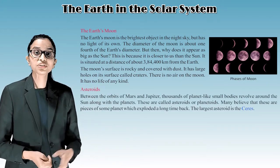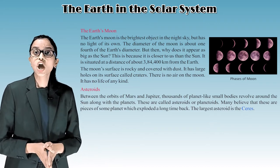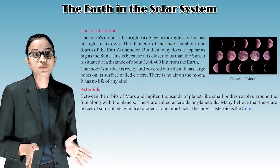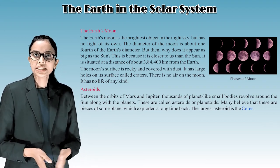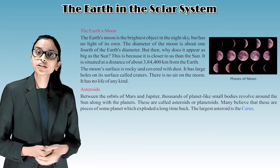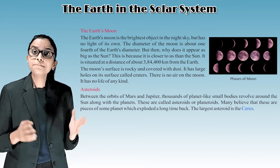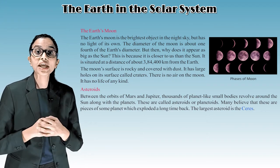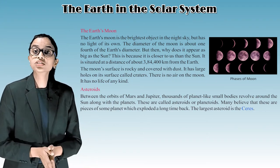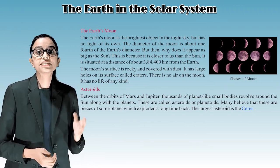Asteroids. Between the orbits of Mars and Jupiter, thousands of planet-like small bodies revolve around the sun along with the planets. These are called asteroids or planetoids. Many believe that these are pieces of some planet which exploded a long time back. The largest asteroid is Ceres.